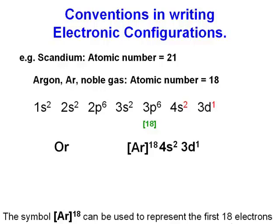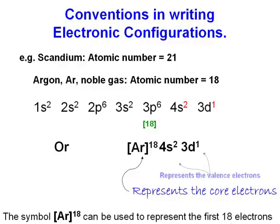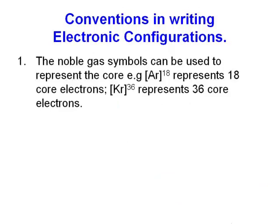The noble gas symbol, which is in square brackets, represents the core electrons. The electrons present in the 4s and 3d orbitals are the valence electrons. So in summary, for any transition element, the symbol of the nearest noble gas can be used to represent the core electrons.